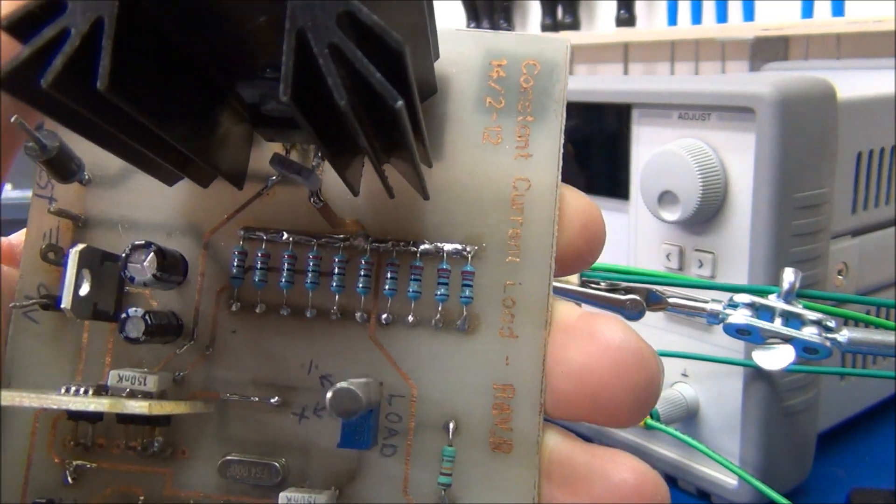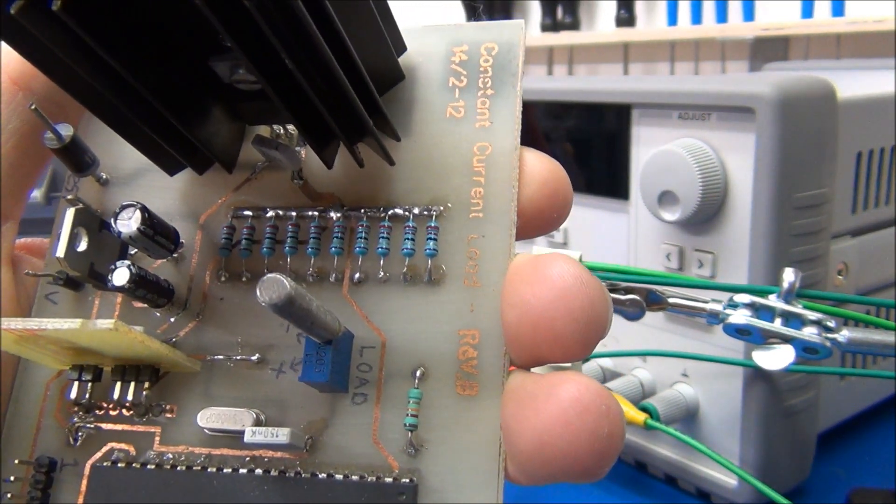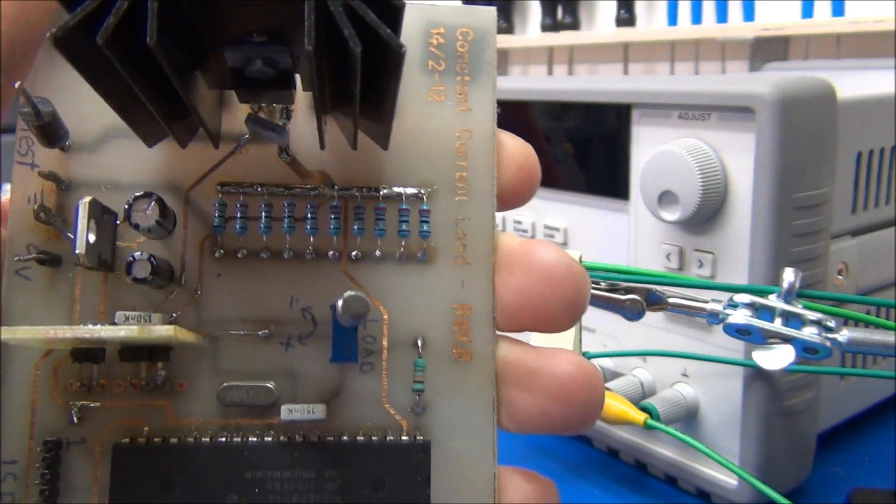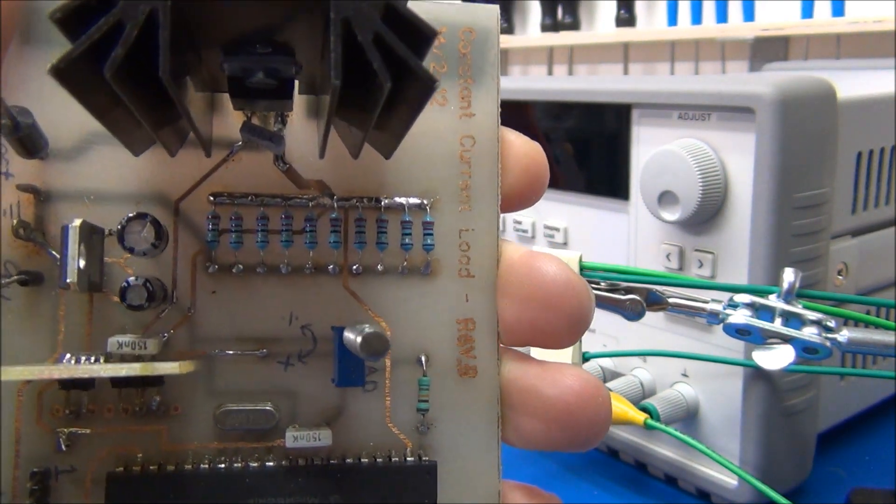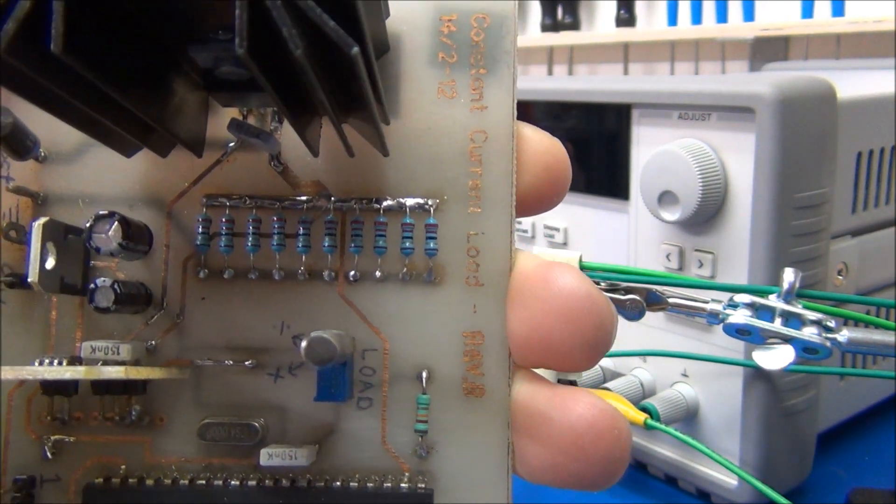But the problem seems to appear only at higher currents, and when working at lower currents the accuracy is fine, so I think it has something to do with the temperature of the resistors.